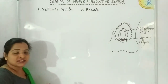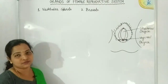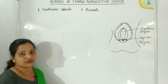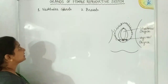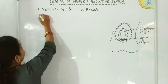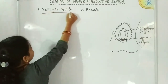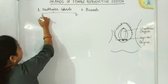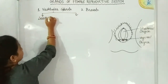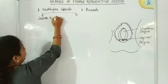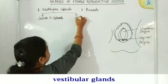Vestibular glands open into the vestibular region or into the vulva, which is why they are named vestibular glands. There are two types of vestibular glands: the lesser vestibular glands and the greater vestibular glands.